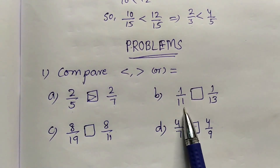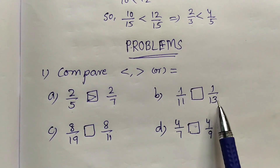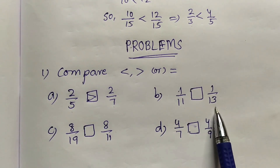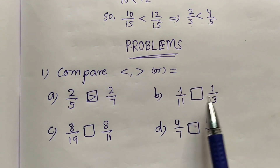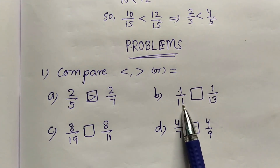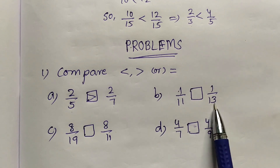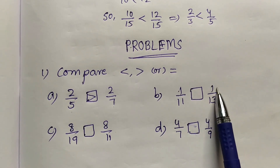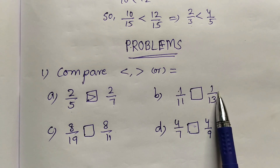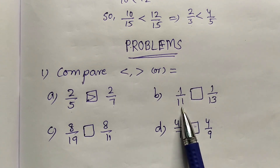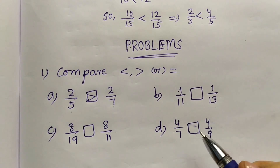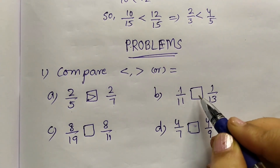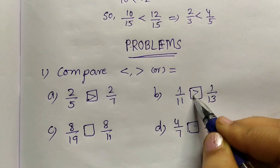Next: 1 by 11 and 1 by 13. Numerators are the same. Compare denominators 11 and 13 — 13 is the greater one. So that fraction is the smaller fraction. 1 by 11 is the greater fraction. So 1 by 11 is greater than 1 by 13.